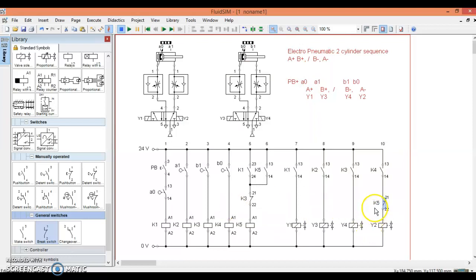Then that contact will open whenever K5 comes on. So at the start, that's going to open, turn off Y2, therefore Y1 can run freely.